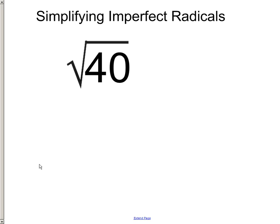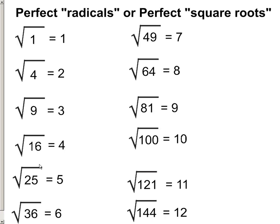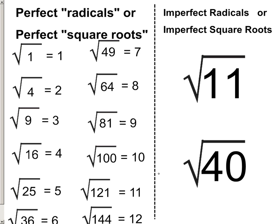What are imperfect radicals or imperfect square roots? Before we do that, let's make sure you understand what a perfect radical is or a perfect square root. That's where the answer is a nice perfect integer — 1, 2, 3, 4, 5, you get the idea. That's a perfect square root.